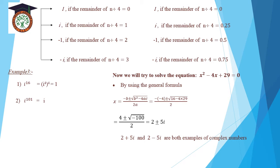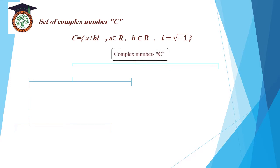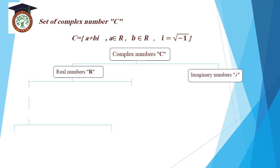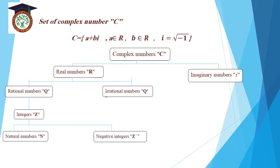The two solutions are 2 plus 5i and 2 minus 5i, which are both examples of complex numbers. The set of complex numbers C equals a plus bi, where a belongs to R and b belongs to R, and i equals square root of negative 1. Complex numbers consist of real numbers and imaginary numbers. The real numbers contain rational and irrational numbers, and the integers contain natural numbers and negative integers.